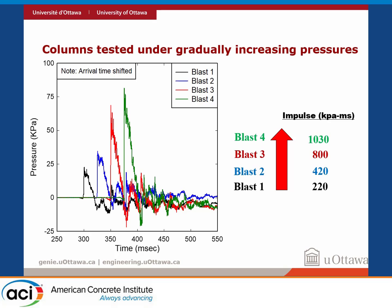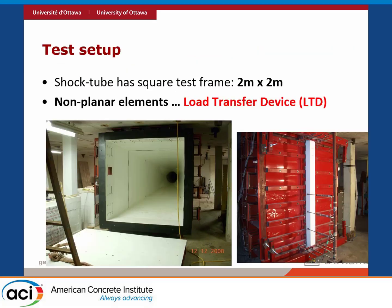In terms of how this affected the columns: the first shot was essentially elastic — just to make sure everything was working. The second shot brought the steel just to yield in the case of normal-strength steel. The third shot really damaged the column. If it survived, we did the fourth one. A bit of a drawback of this test is the repeated loading, so we have to keep that context in mind.